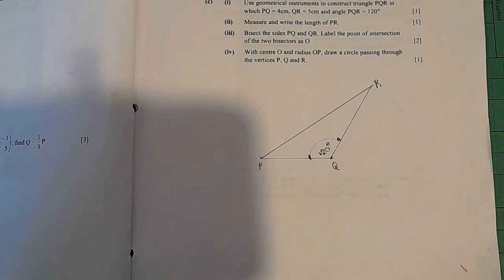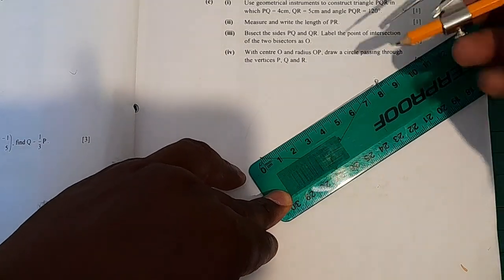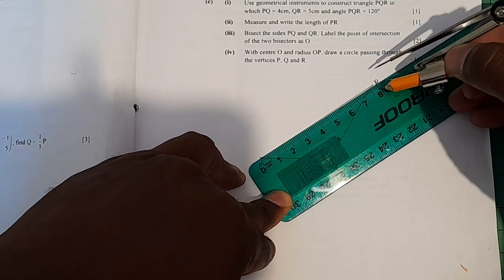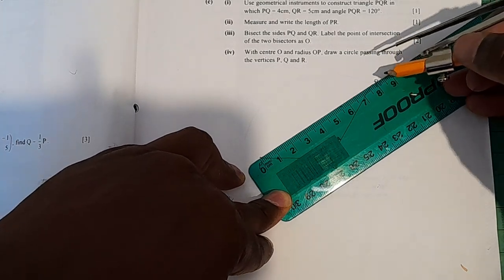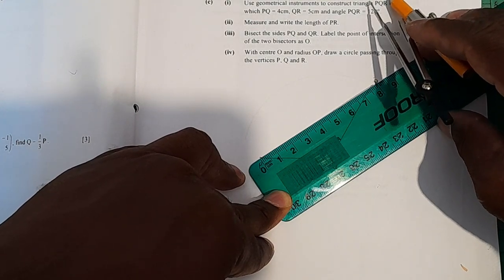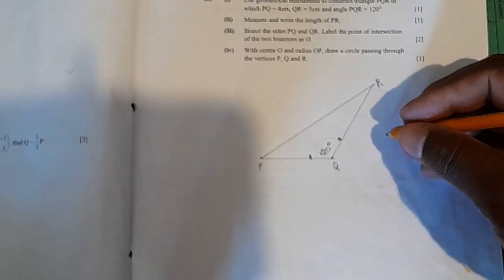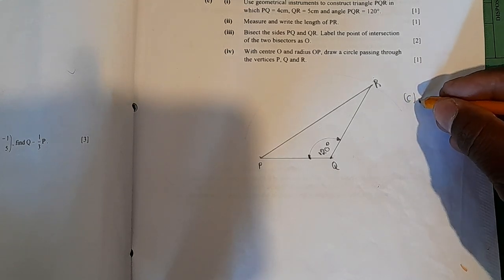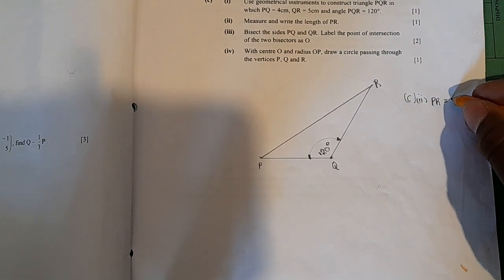On Roman numeral two, they're saying measure and write the length of PR. Which one is PR? PR is this one here. That's seven. You start counting those dimensions which are made of seven and eight: 7.1, 7.2, 7.3, 7.4, 7.5, 7.6, 7.7, 7.8. That's 7.8. I'm coming back here on the same drawing, I'm going to indicate this is question C Roman numeral two, and then I'm going to show what I had just measured. PR is equal to 7.8 centimeters.